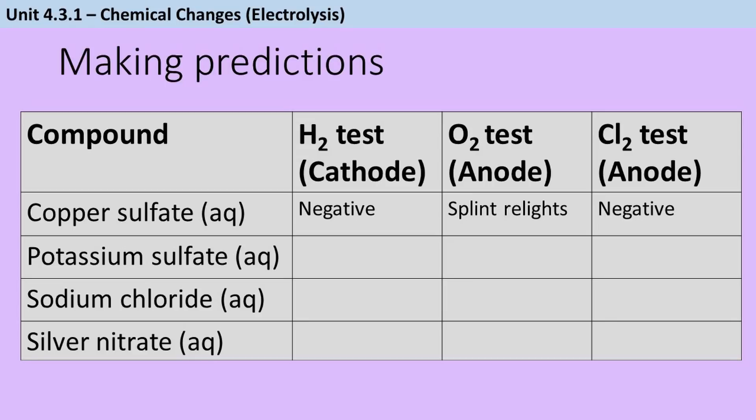If we take potassium sulfate on the other hand, potassium is more reactive than hydrogen. So the potassium stays in solution, the hydrogen comes out. If we do the squeaky pop test, we will see this little explosion, we will hear this squeaky pop sound. But again, we've got no halide, so the hydroxide ion will be discharged and we'll have oxygen. We can relight a glowing splint.